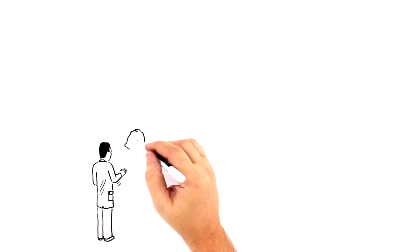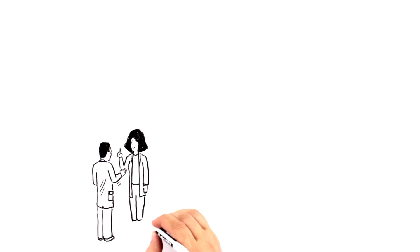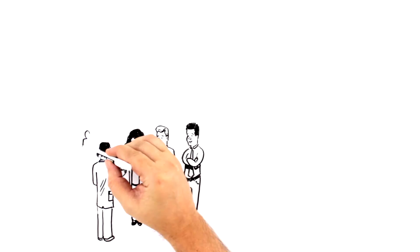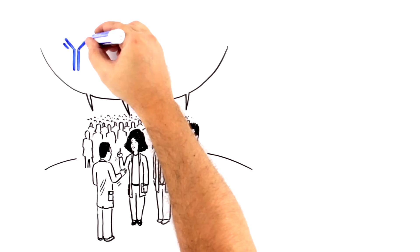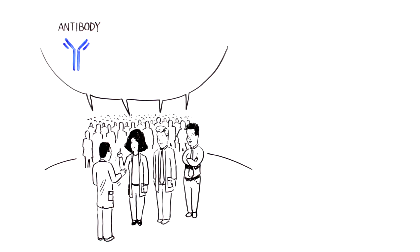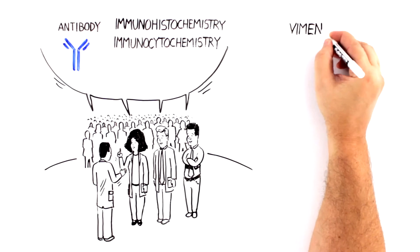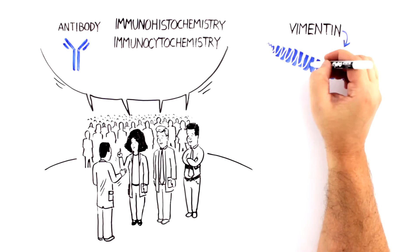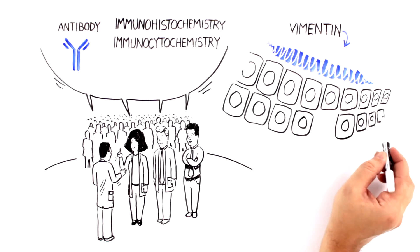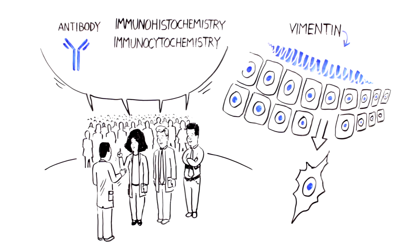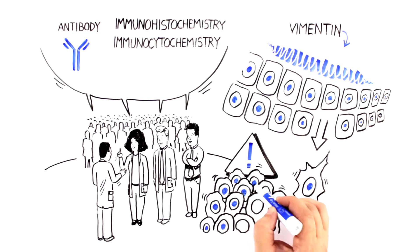Our story begins out in the field. Our scientists talked to research scientists who told us they needed a highly specific antibody that could be used in immunohistochemistry and immunocytochemistry to target Vimentin, a protein associated with the epithelial to mesenchymal shift of tumor cells, which is required for some normal developmental processes, but also marks the initiation of metastasis in cancer progression.